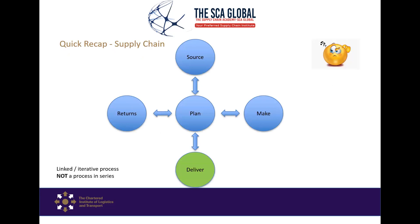Let's give a quick recap on supply chain. Supply chain is essentially made up of five vital cogs in the wheel.